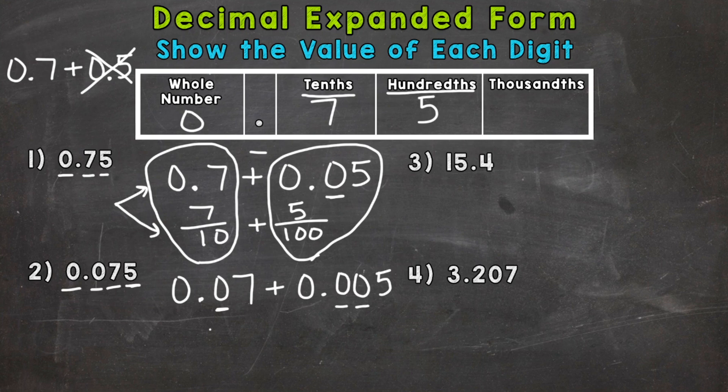Fractional form, well, seven hundredths plus five thousandths.